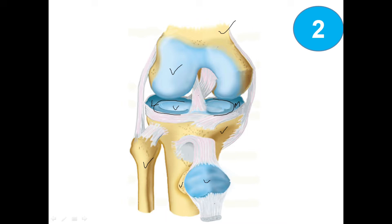Now we can come to the ligaments. Starting from the middle, this is the anterior cruciate ligament, this is the posterior cruciate ligament. Medially, this one is the medial collateral ligament, also known as the tibial collateral ligament due to the tibia on this side. Laterally, this one is the lateral collateral ligament or fibular collateral ligament. This one is the patellar ligament and this is the tendon of the quadriceps femoris muscle.